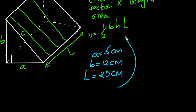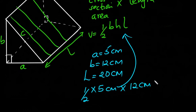So when we apply this formula, it's going to be a half times base times height, so that is the area of the triangle, which is the cross-section. So it's a half times base, which is 5 cm, times height, which is 12 cm, and then times the length of the prism, which is 20 cm. So when we work this out, it's going to be 600 cm³.